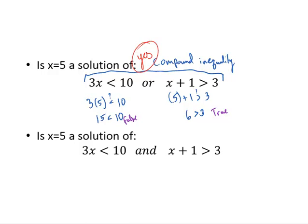Now, is x equals 5 a solution of 3x is less than 10 and x plus 1 is greater than 3? We know the first comes back false and the second comes back true. So is x equals 5 a solution of the 'and' inequality? No, because not both were satisfied.